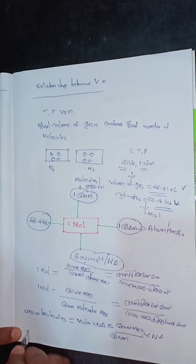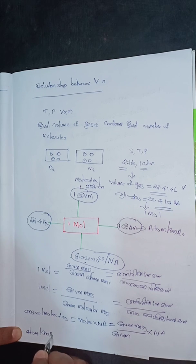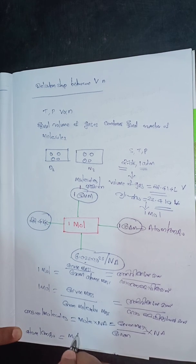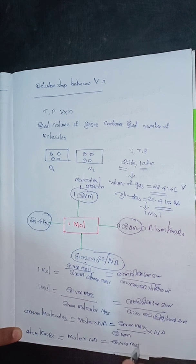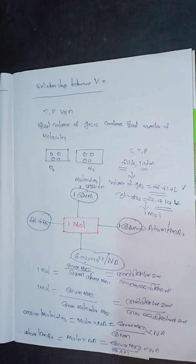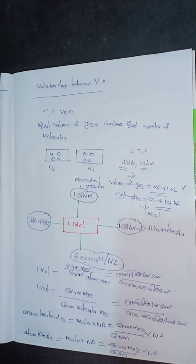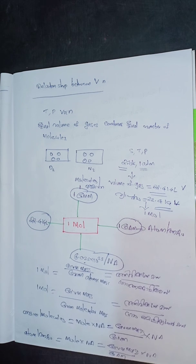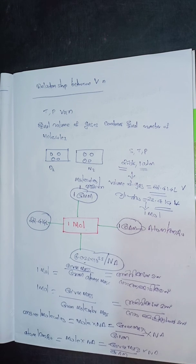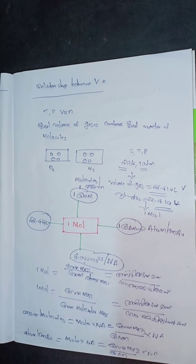Number of molecules N = (given mass / atomic mass) × Nₐ (Avogadro's number). When I am asked this question, that is the answer.